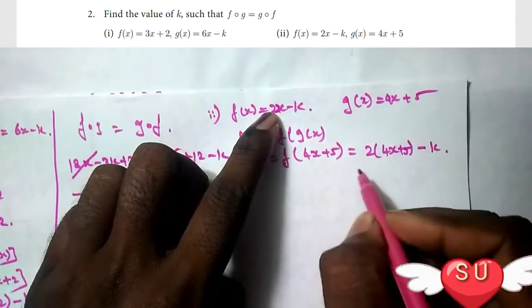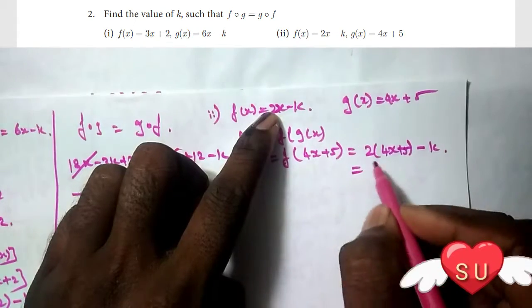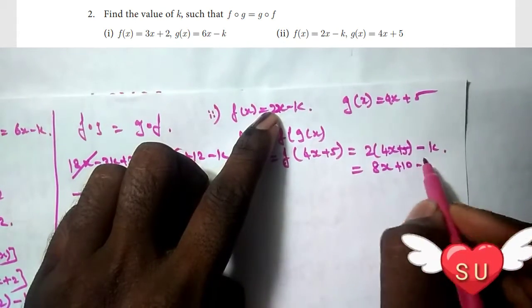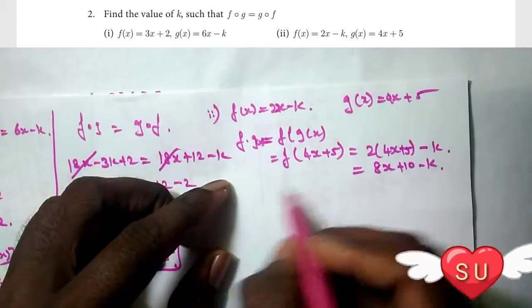f of (4x plus 5) equals 2 times (4x plus 5) minus k, which gives 8x plus 10 minus k.